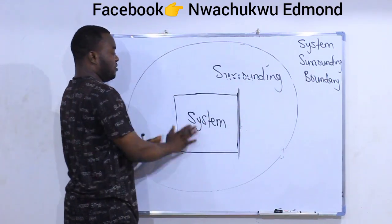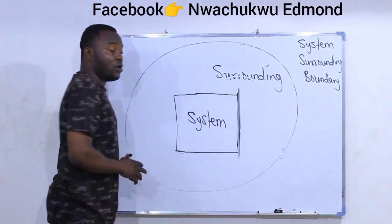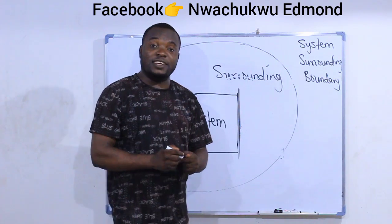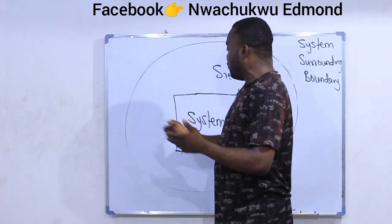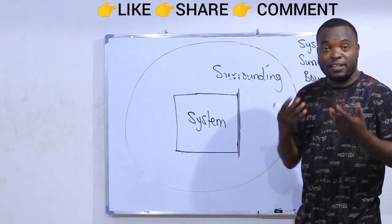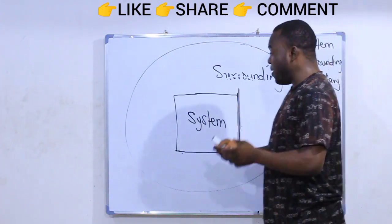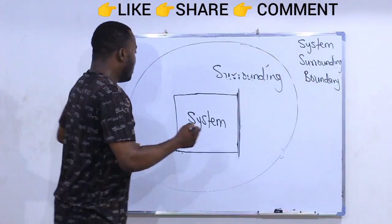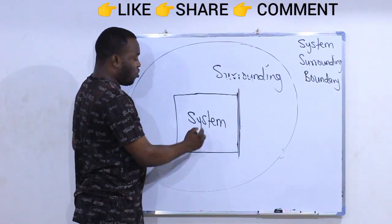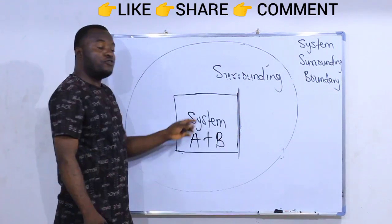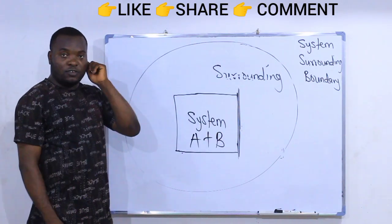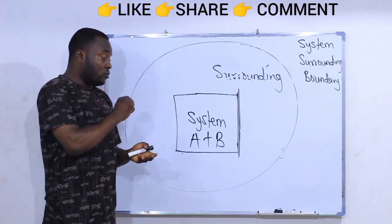We are looking at the system and the surrounding. The system and the surrounding can interact in different ways — they can exchange energy, and they can exchange matter, which is mass, depending on the type of system you are using. Inside the system, those reactants — let's call them A and B — may gain energy or lose energy, depending on what you are doing to them.